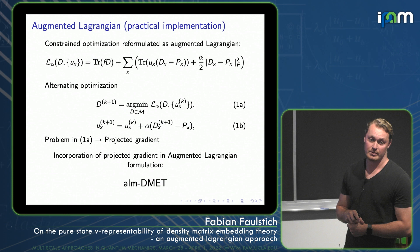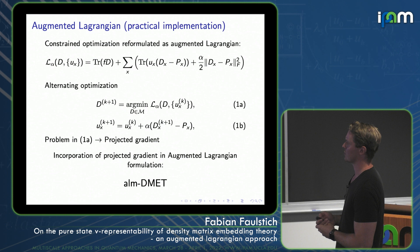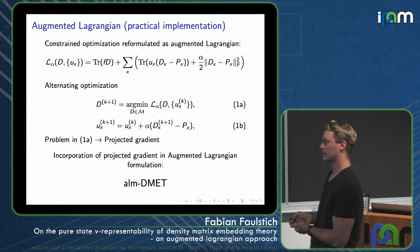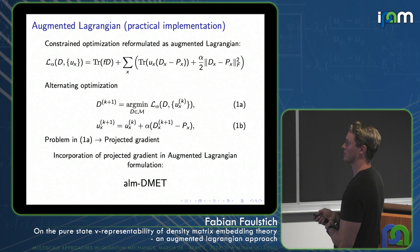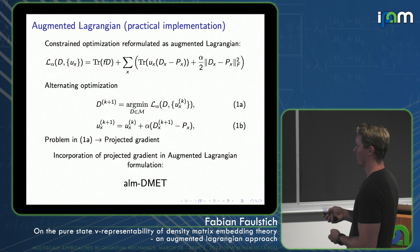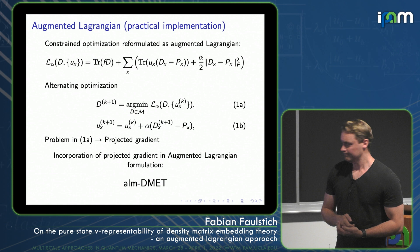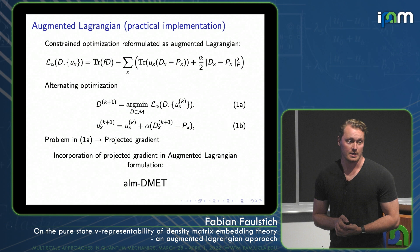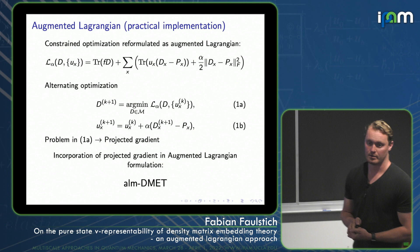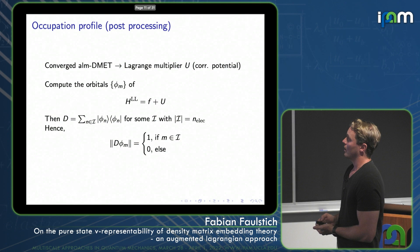How do we implement this augmented Lagrangian and minimize it in practice? This is where the projected gradient comes into play. We optimize this Lagrangian alternatingly: fix the correlation potential, minimize with respect to D to find the argument of the augmented Lagrangian, then update the Lagrange multipliers, feed them back in, and repeat until convergence. The argmin is found using the projected gradient method. The incorporation of this augmented Lagrangian formulation into the SCF DMET procedure is what we call ALM DMET — augmented Lagrangian method DMET.